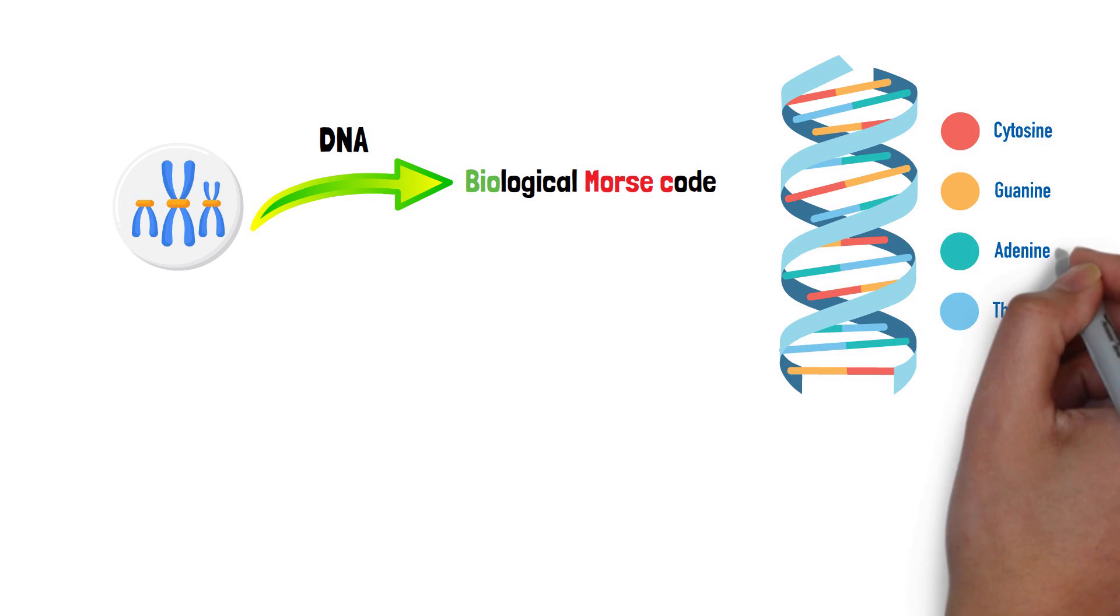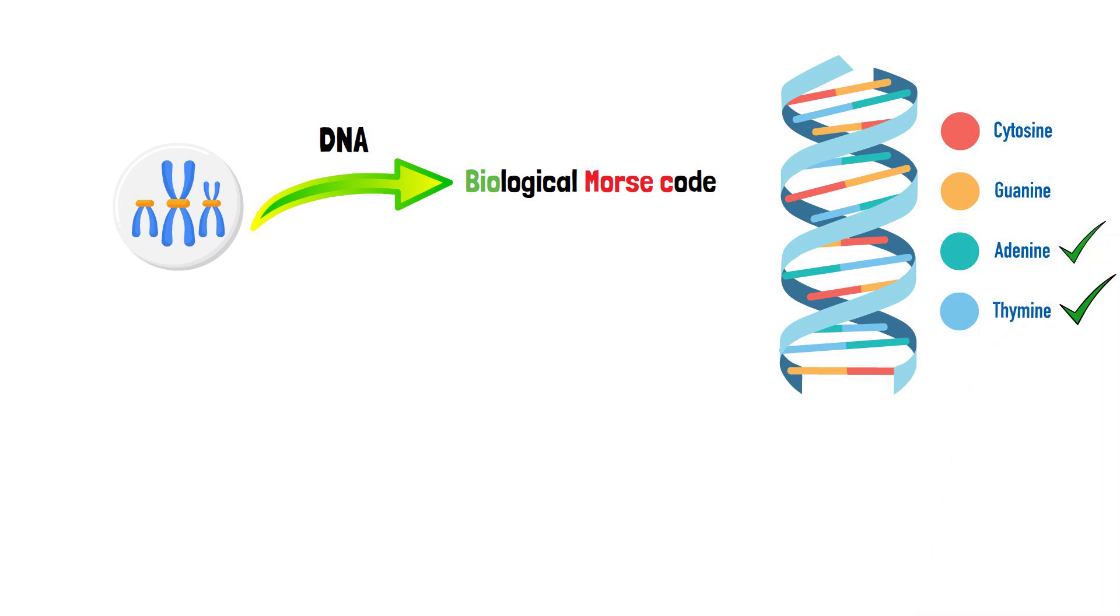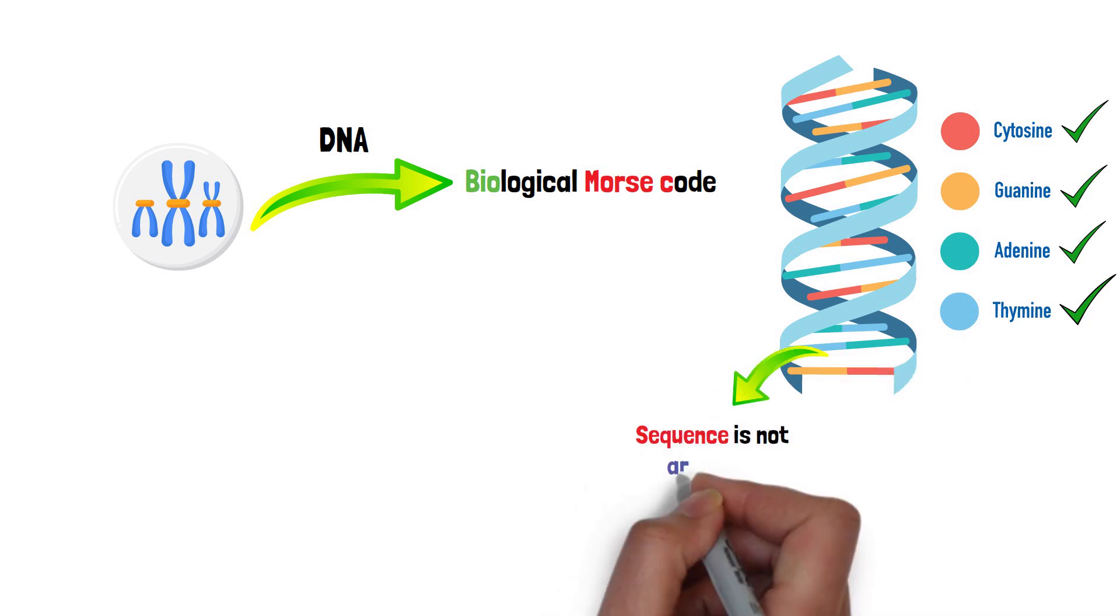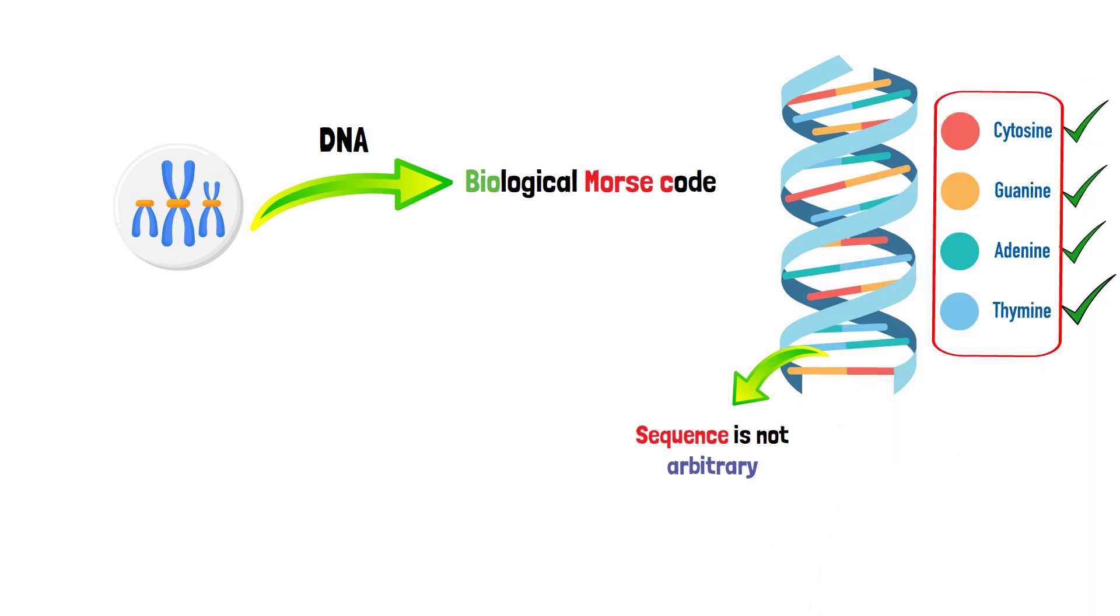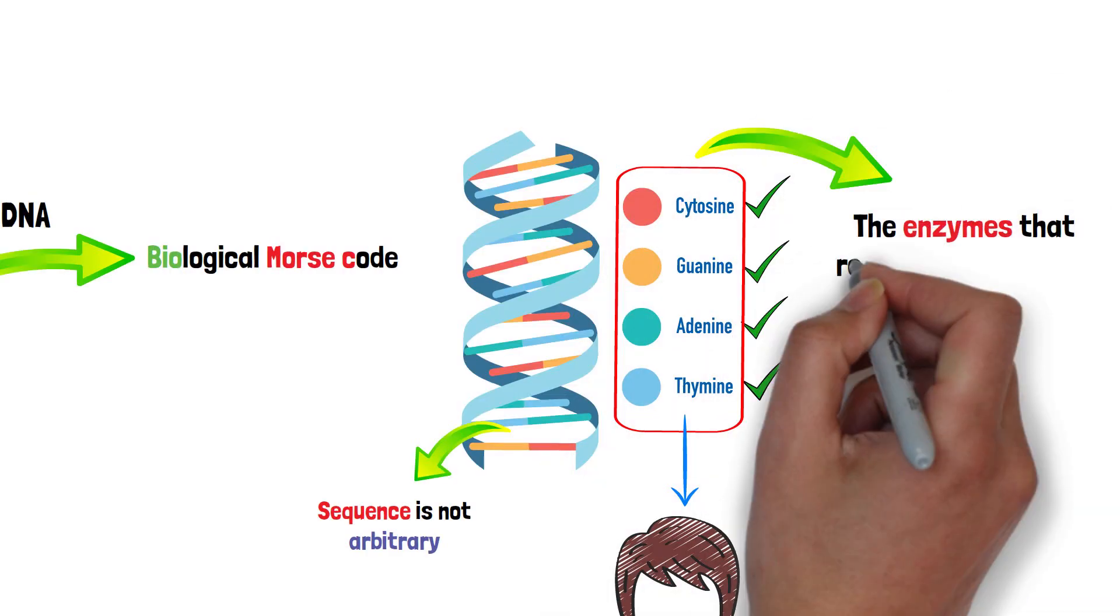The encoding of genetic information in DNA is akin to a biological Morse code, with the sequence of four nitrogenous bases: adenine (A), thymine (T), guanine (G), and cytosine (C), dictating life's instructions. This sequence is not arbitrary. It is a precise language that governs everything from hair color to the enzymes that regulate metabolism.